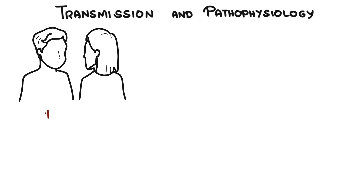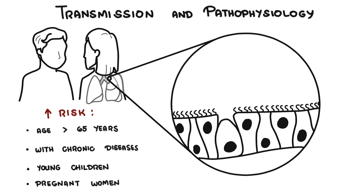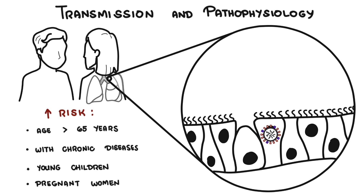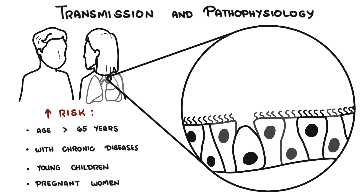Those particularly at risk include individuals over 65 years old, those with chronic diseases, young children, and pregnant women. Following respiratory transmission, the virus attaches to and penetrates respiratory epithelial cells in the trachea and bronchi. Viral replication occurs, where the virus multiplies, resulting in the destruction of the host cell. Regeneration of the epithelium then takes about three to four weeks.